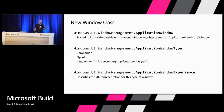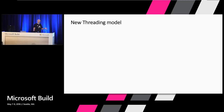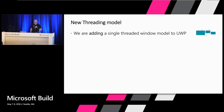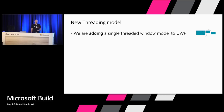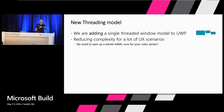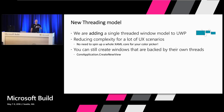But how does this actually make your life easier? This is just another window class — we could just rename ApplicationView to ApplicationWindow and be done. Not quite. What is happening behind the scenes is that we're introducing a new threading model to UWP: a single-threaded windowing model. So now that ApplicationWindow runs on the same thread as your ApplicationView that you created it from. You can create multiple of these windows and they will all run on that same thread — no more need to dispatch between threads just to get that color picker to work. We believe this reduces a lot of complexity for a lot of UX scenarios, because you also don't need to spin up a whole new XAML core. And you can still create windows that are fully backed by their own threads — we're not taking anything away, we're adding.